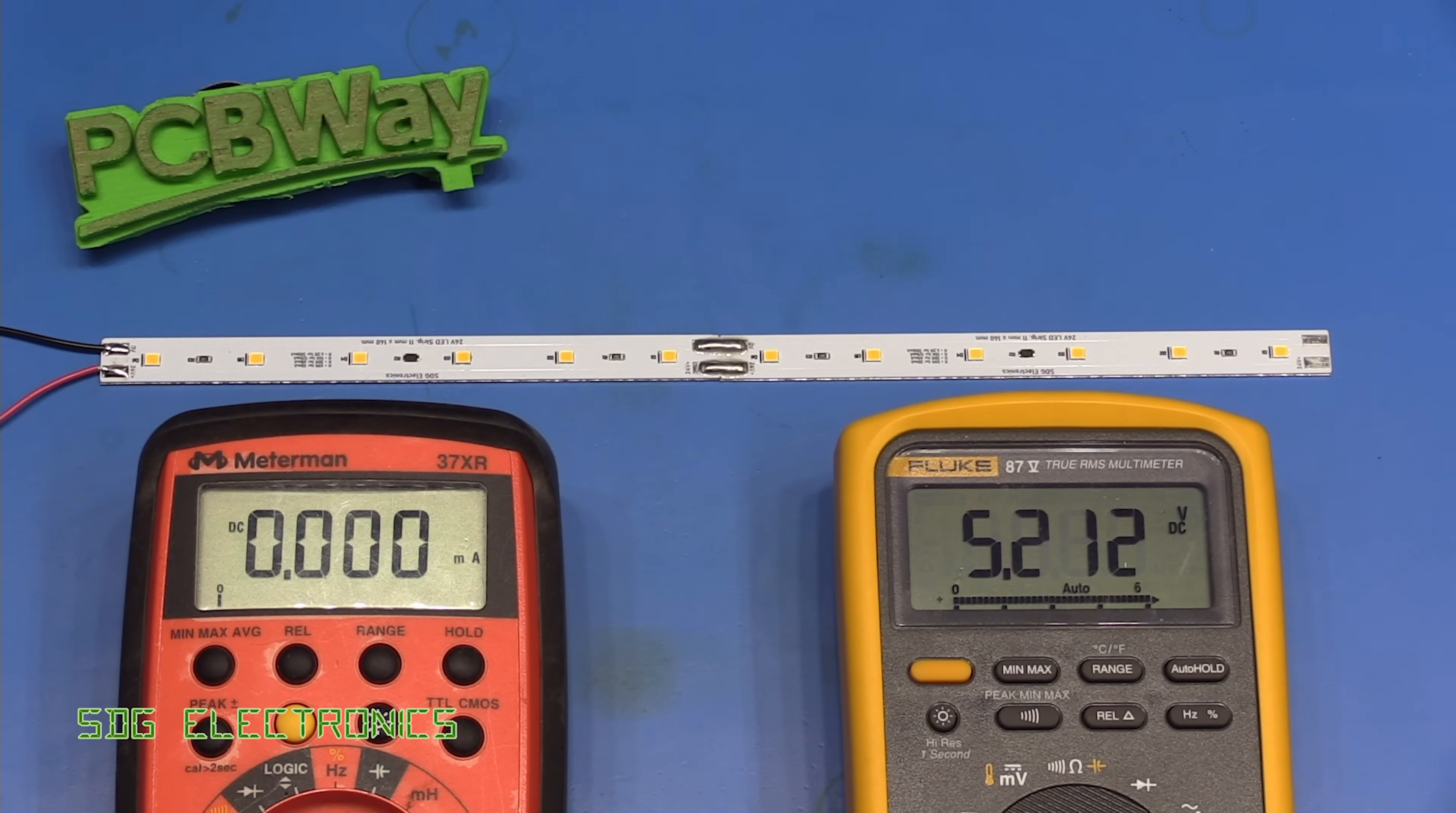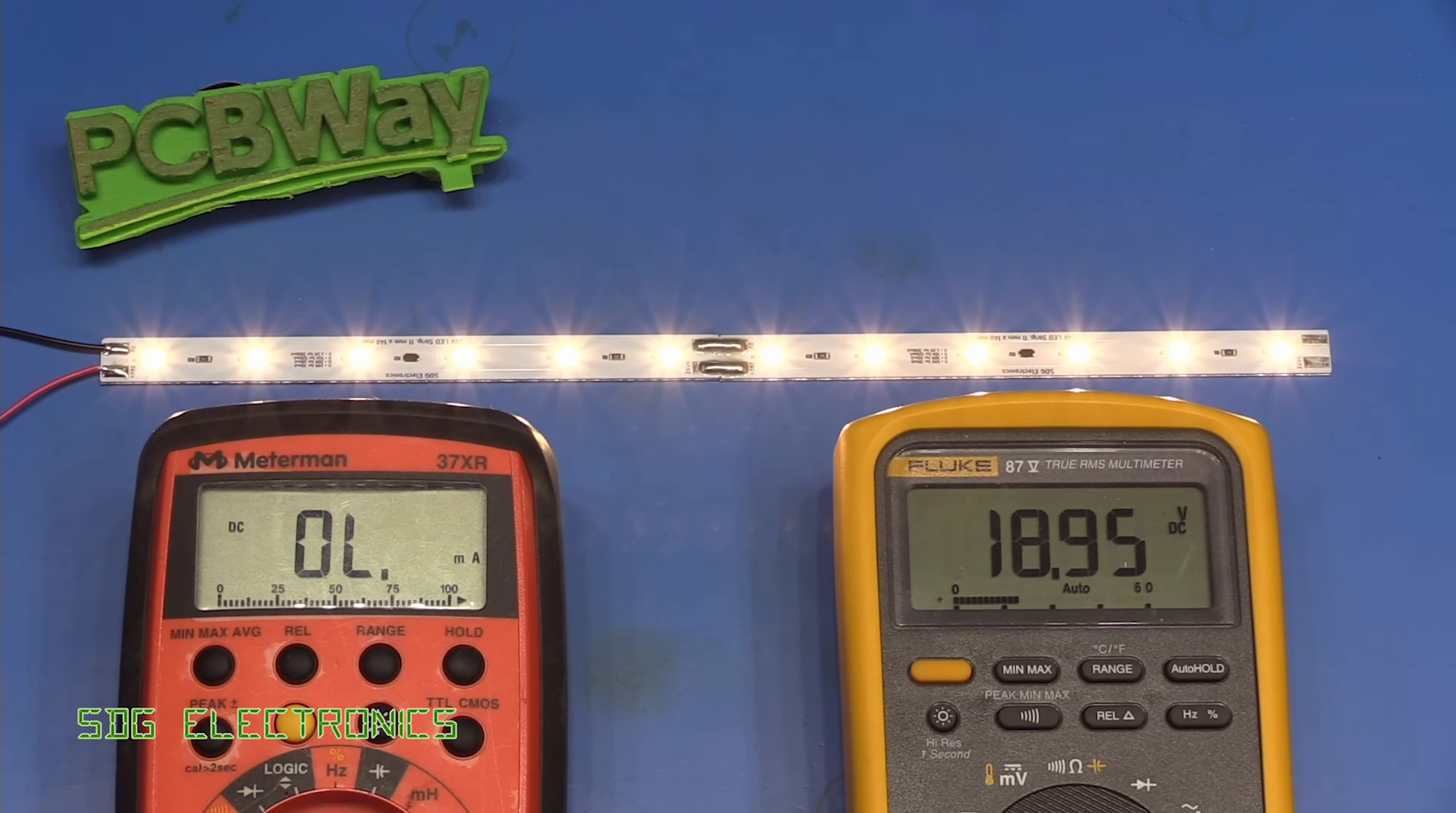So I'll bring up the supply voltage and the LEDs are starting to conduct at about 16 volts now it should start regulating somewhere around 22 and there we go.